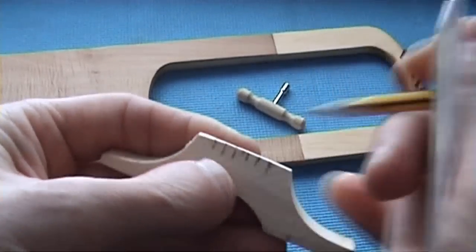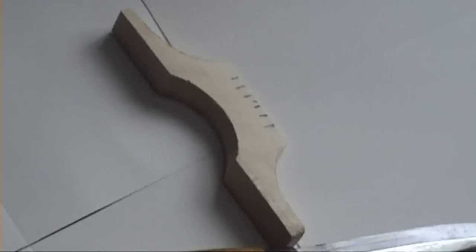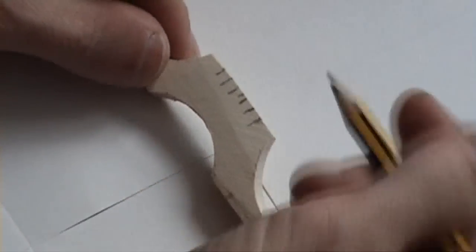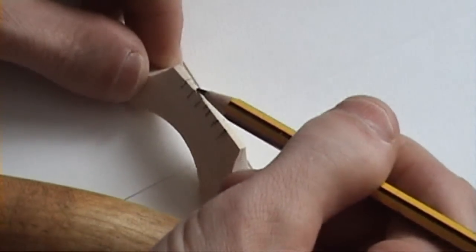Then what we need to do is to mark that with a knife. So we have our spacing. We just mark on the top as well.